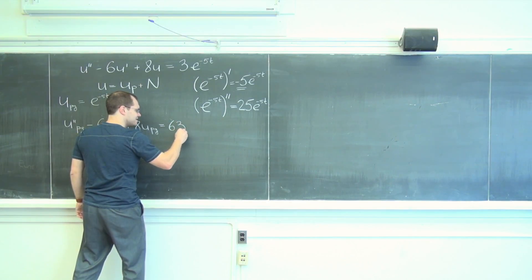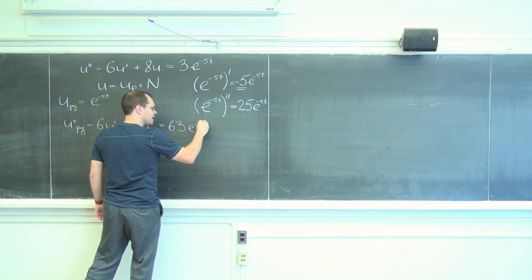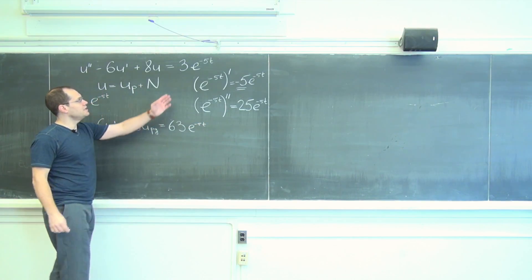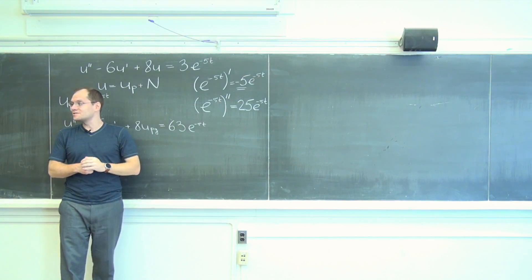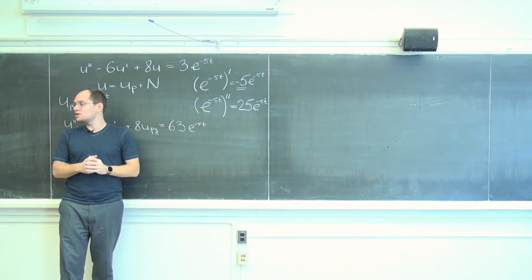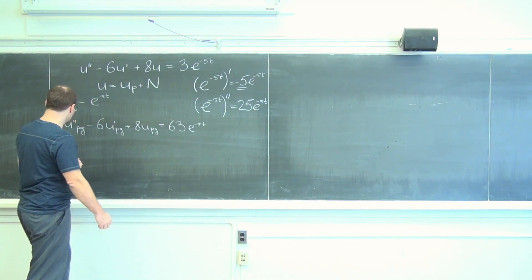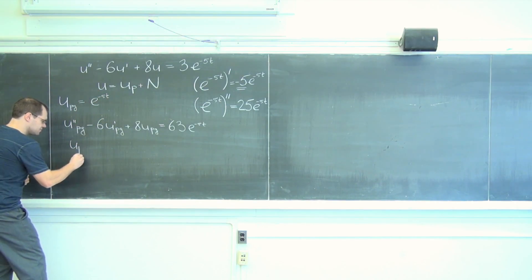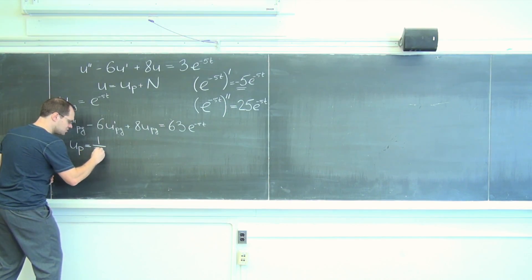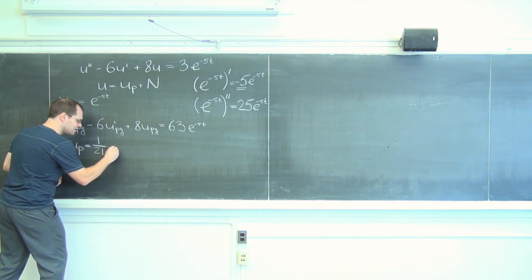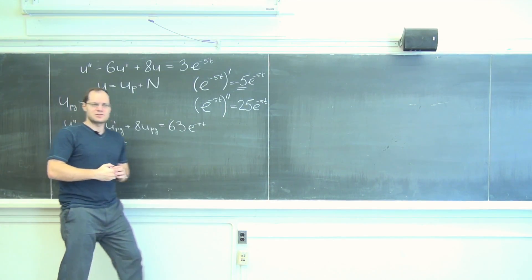Not so bad. 63 e to the minus 5 T and we need 3. So we're 21 times off. That's not a problem. We'll just put an adjustment of 1 over 21. Okay, so u particular equals 1 over 21 e to the minus 5 T. And that's all there is to it.